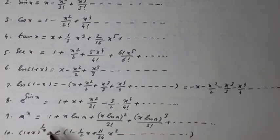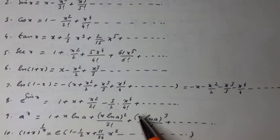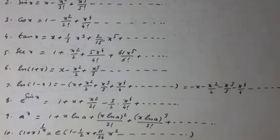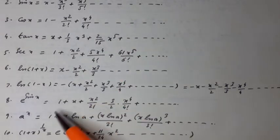a to the x is equal to 1 plus x times natural log a plus x times natural log a all squared over 2 factorial plus x times natural log a cubed over 3 factorial plus so on. Also, 1 plus x raised to the power 1 over x equals e times 1 minus 1 over 2 times x plus 11 over 24 times x squared minus so on. These can be proved by using McLaurin's expansion.